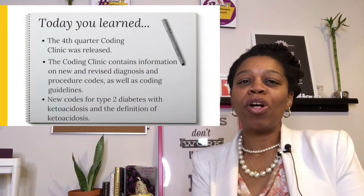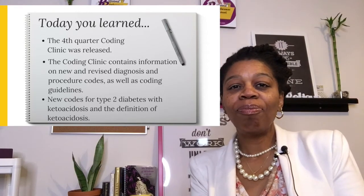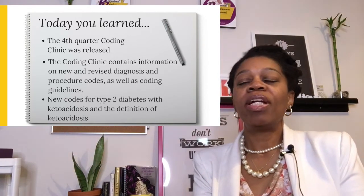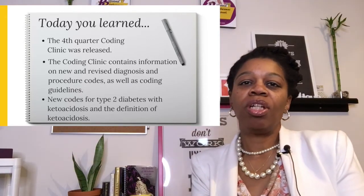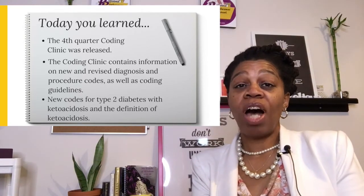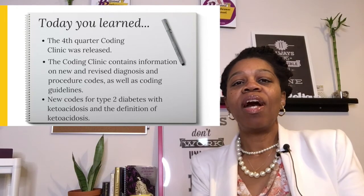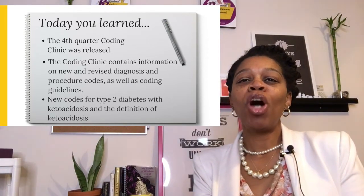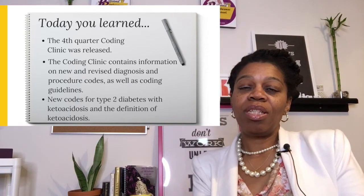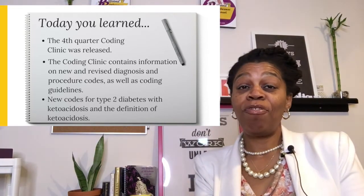Today, you learned the fourth quarter coding clinic was released. You learned that the coding clinic contains information on new and revised diagnoses and procedure codes, as well as coding guidelines. You also learned new codes for type 2 diabetes with ketoacidosis and the definition of ketoacidosis. If you have found value in this information, please like, share, and comment on our video. And don't forget to subscribe to our channel. We would love to stay connected with you.